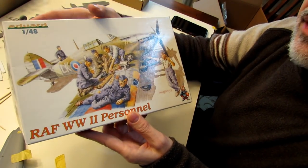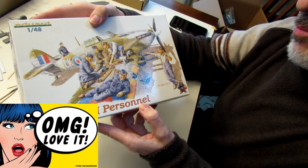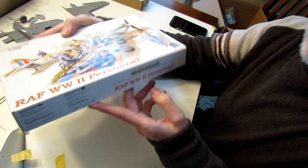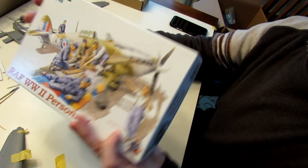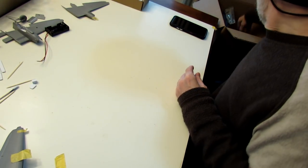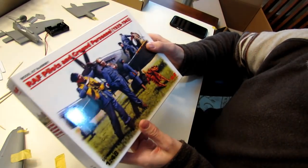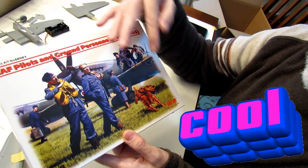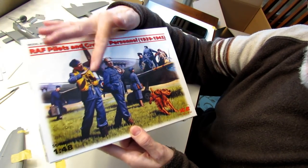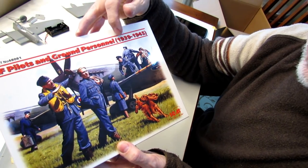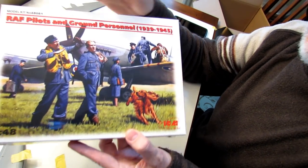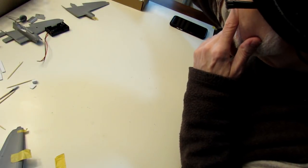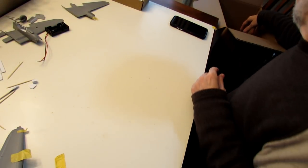So I got the Eduard 1:48 RAF World War II personnel—comes with six figures and there's some other things in there I believe that it comes with. But now I've got figures, but I wanted a choice of figures. So I bought the ICM kit—there's seven figures in this one, includes a dog as well. Two pilots, a woman officer, some guys working on the aircraft, and a pilot looking like he's getting into the aircraft there. So I've got 13 figures basically between those two kits.